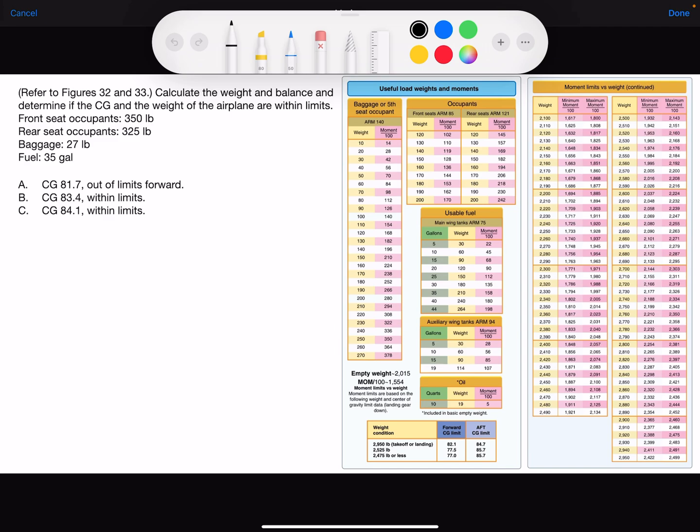They provide the weight of the front and rear seat occupants, baggage, and the fuel quantity. We also need the airplane's empty weight, which you'll find on figure 32 right here. I'm going to organize everything into a table.